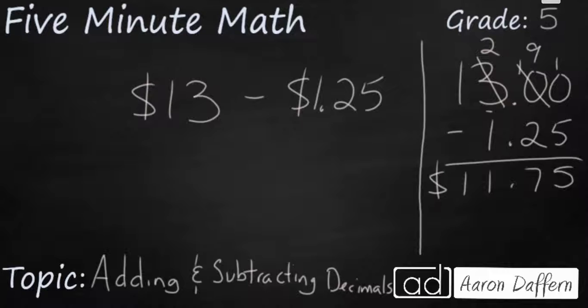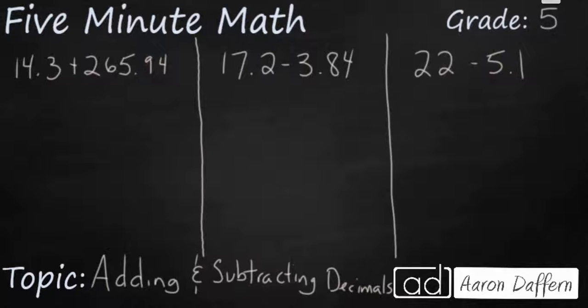Now it's your turn. I've got three problems for you here. 14 and three tenths plus 265 and 94 hundredths, 17 and two tenths minus 3 and 84 hundredths, and then 22 minus 5 and one tenth. Pause the video, solve these problems, and when you're done start it back up and check your work.